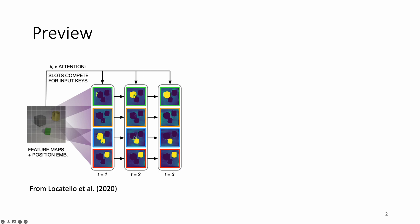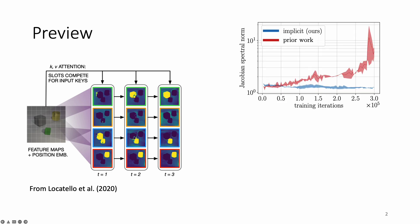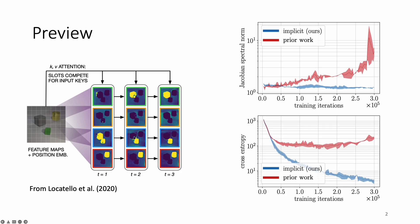Current object-centric models, such as slot attention, decompose a scene into separate representations of its constituent objects using an iterative procedure. But the problem is that these methods are generally difficult to optimize, as we can see by the growing Jacobian norm in red. In this talk, my goal is to convince you that it is useful to conceptualize object representations as stable points of a fixed point procedure. The way I'm going to do that is to show that this insight enables us to take advantage of implicit differentiation techniques, which you see in blue, to stabilize training and improve learning performance.